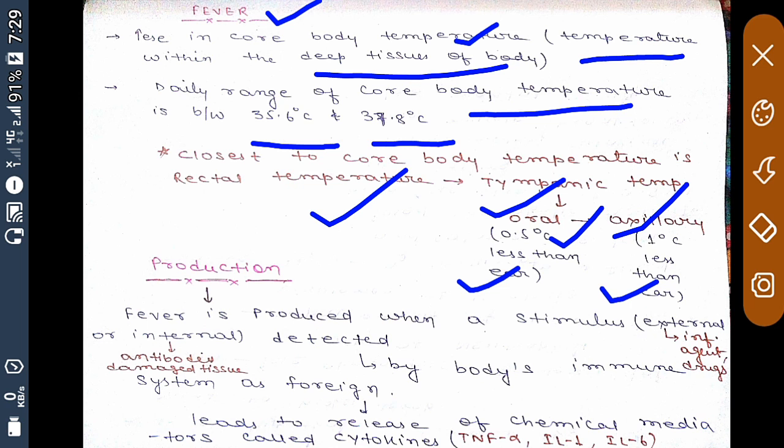How is fever produced? Fever is produced when a stimulus—which may be external or internal—is detected. External stimulus may be an infectious agent or drugs you are taking. Internal stimulus may be antibodies or damaged tissue.